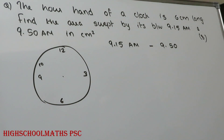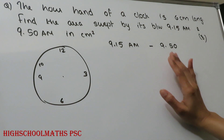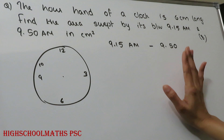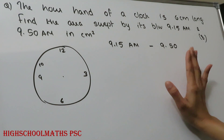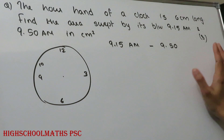Hi, this is Miro. Welcome back to our channel, High School Maths PSE. In the previous video, we discussed the Divisional Account and Mains Syllabus 2016. This is the second question: the hour hand of a clock is 6 cm long. Find the area swept by it between 9:15 am and 9:50 am in cm².